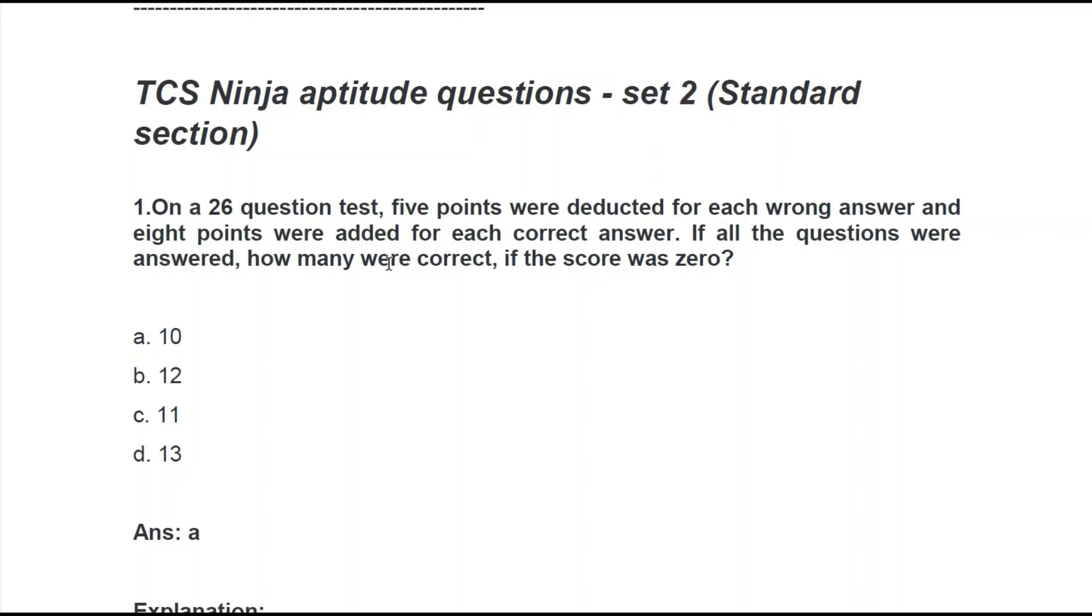On a 26-question test, 5 points were deducted for each wrong answer and 8 points were added for each correct answer. If all the questions were answered, how many were correct if the score was zero? So this is a question which is supposed to be solved with linear equation. It's given the total number of questions is 26 and they have asked for how many are correct.